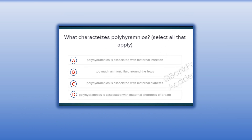What characterizes polyhydramnios? Select all that apply. A. Polyhydramnios is associated with maternal infection. B. Too much amniotic fluid around the fetus. C. Polyhydramnios is associated with maternal diabetes. D. Polyhydramnios is associated with maternal shortness of breath.